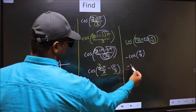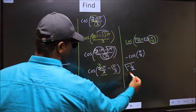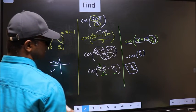So negative cos π by 3 is 1 by 2. This is our answer.